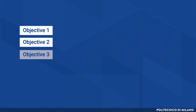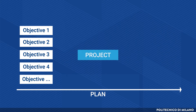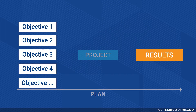We can think of the project more or less in this way: we've got some objectives, we do a plan, we do a project, we get to certain results. So the first control we can do is just making a comparison between our initial objectives and the results obtained at the end of the project. And we might discover that they are not aligned — so we didn't do exactly what we wanted to do.